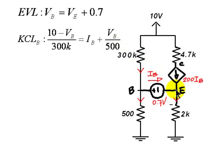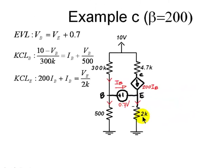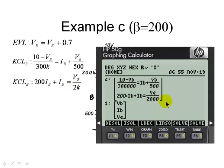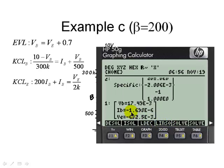And the other KCL equation for node E, here, currents going in, 200 IB plus IB, currents leaving, only this one, VE over 2000 ohms. We enter those three equations in the calculator, ask for those three unknowns, VB, VE, and IB, and we solve for those values. And we concentrate on one value we need, the base current. The base current turns out to be a negative number.